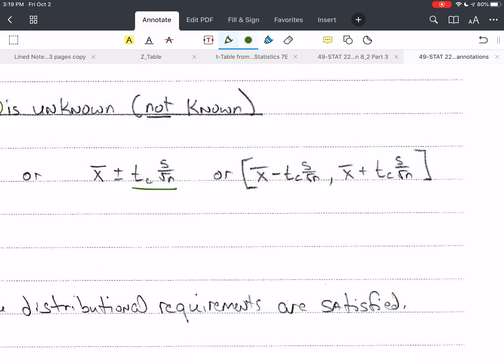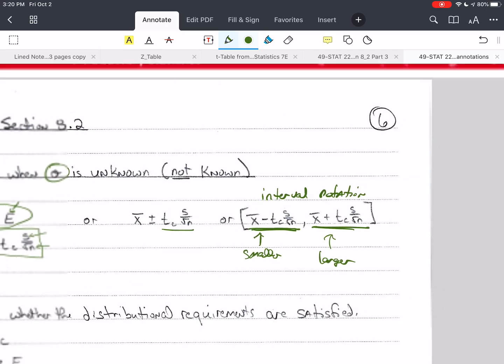Or I can write it in interval notation. The lower value is always smaller. So I have x bar minus t sub c times s over the square root of n, and x bar plus t sub c times s over the square root of n for the upper number.